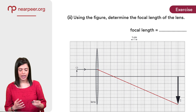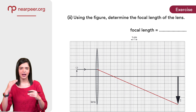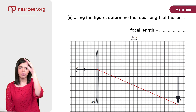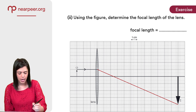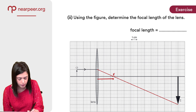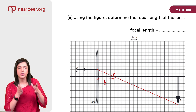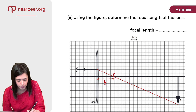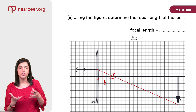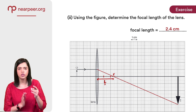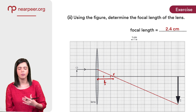Using the figure, determine the focal length of the lens. Remember: a ray coming in parallel to the principal axis refracts through the converging lens and passes through the focal point. That intersection is the focal point. Count the boxes using the given scale — one big box equals one centimeter. Counting gives us one centimeter, two centimeters, plus two small boxes which is 0.4 cm, so the focal length is 2.4 centimeters.